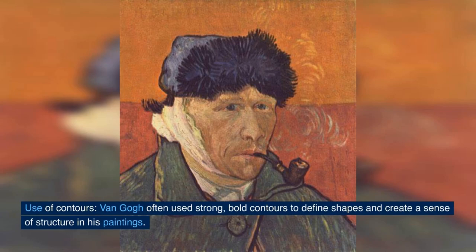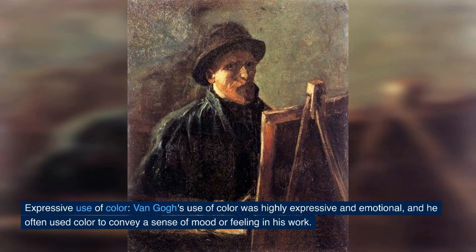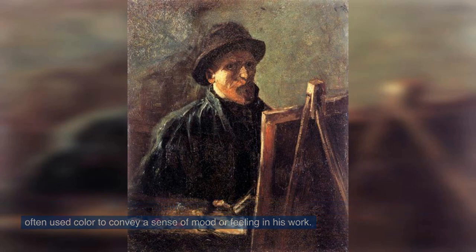Van Gogh often used strong, bold contours to define shapes and create a sense of structure in his paintings. His use of colour was highly expressive and emotional, and he often used colours to convey a sense of mood or feeling in his works.